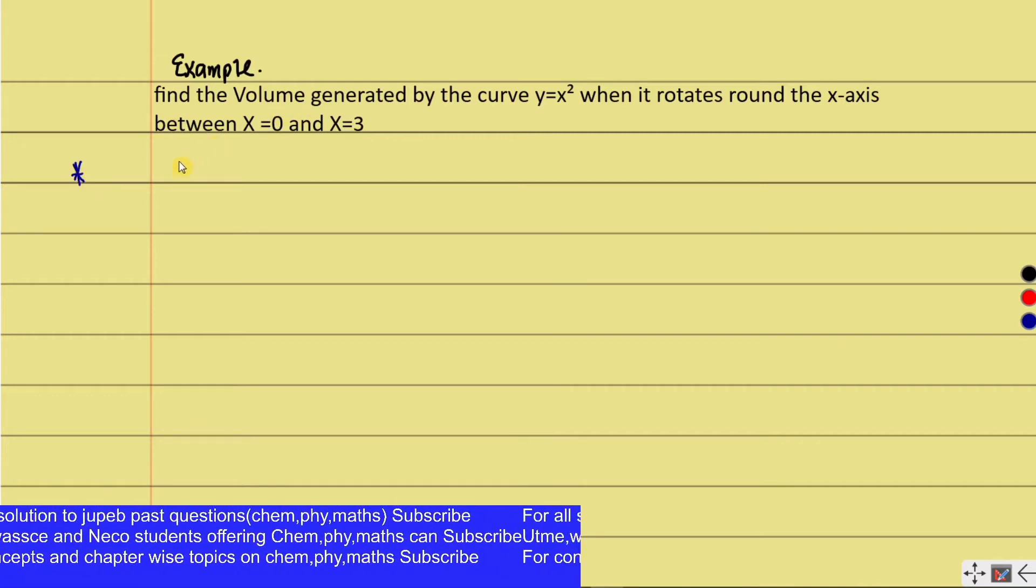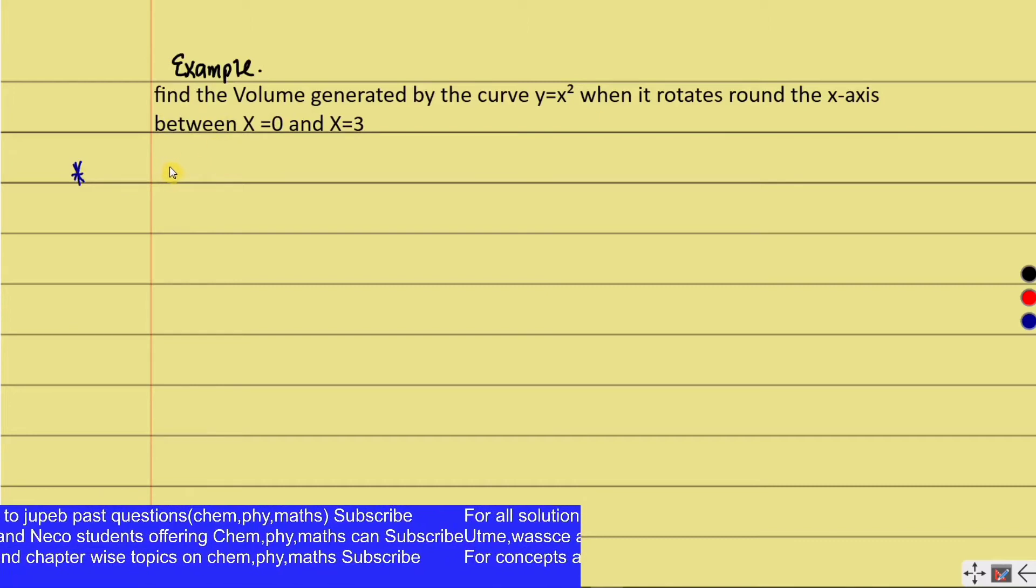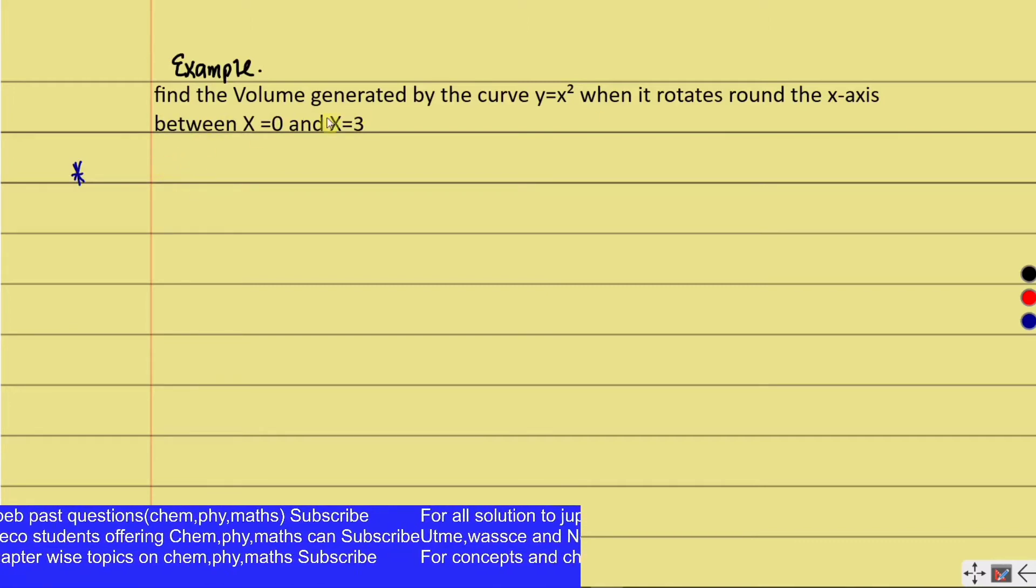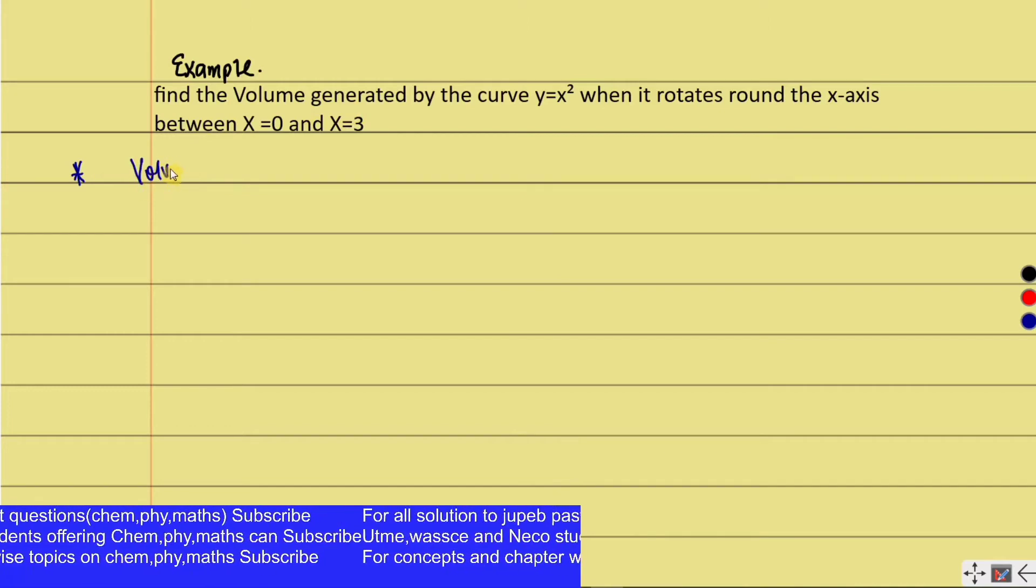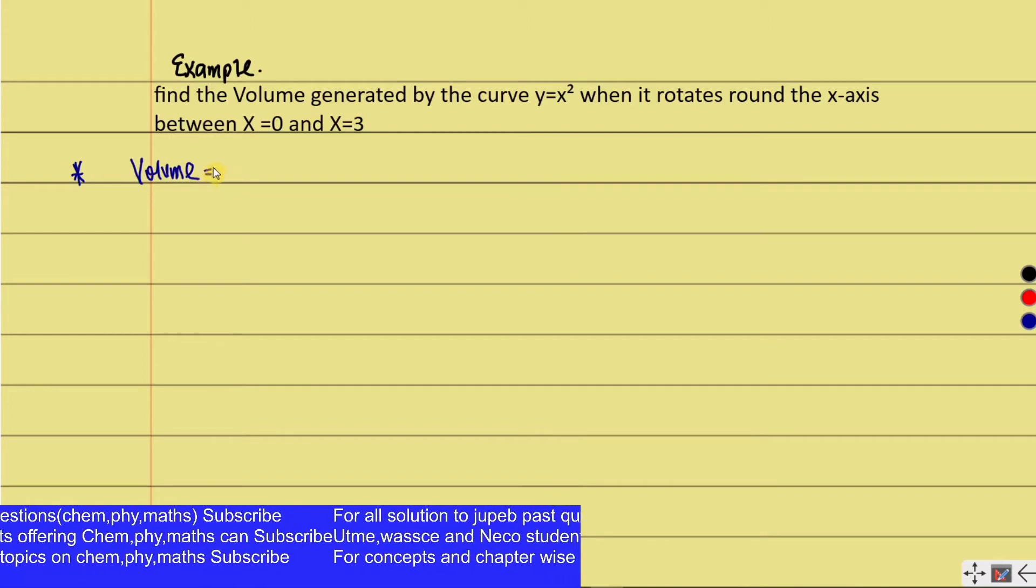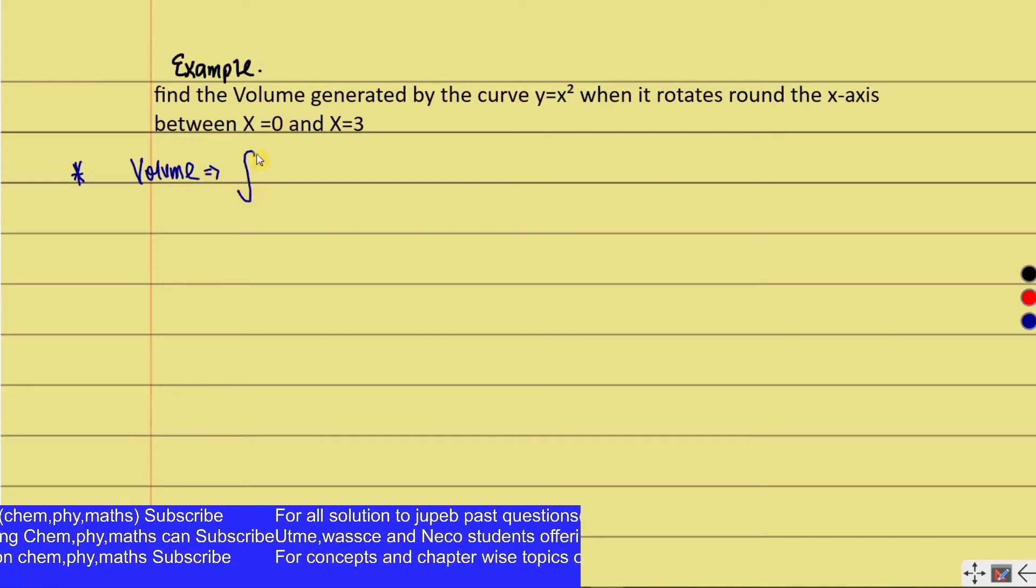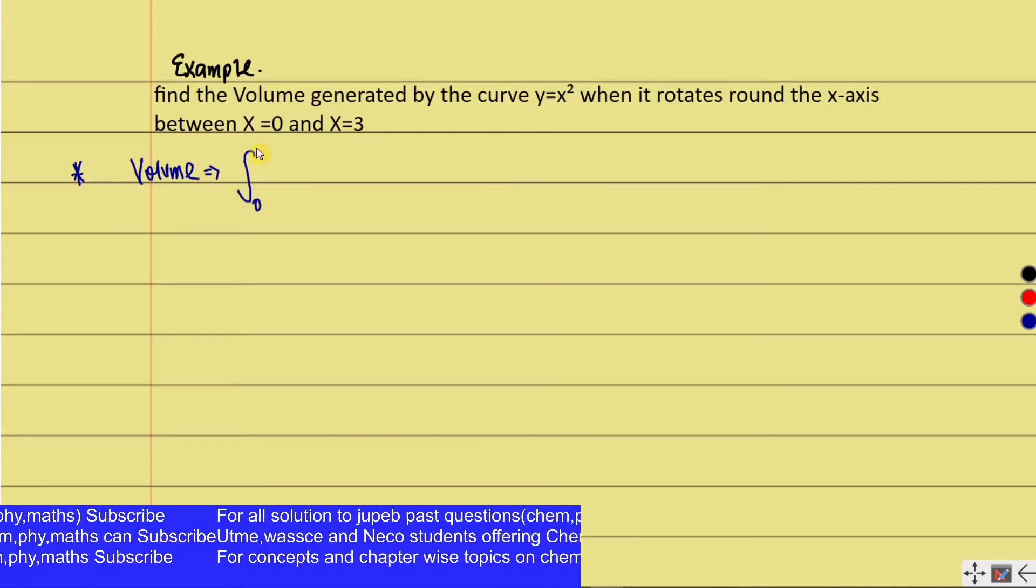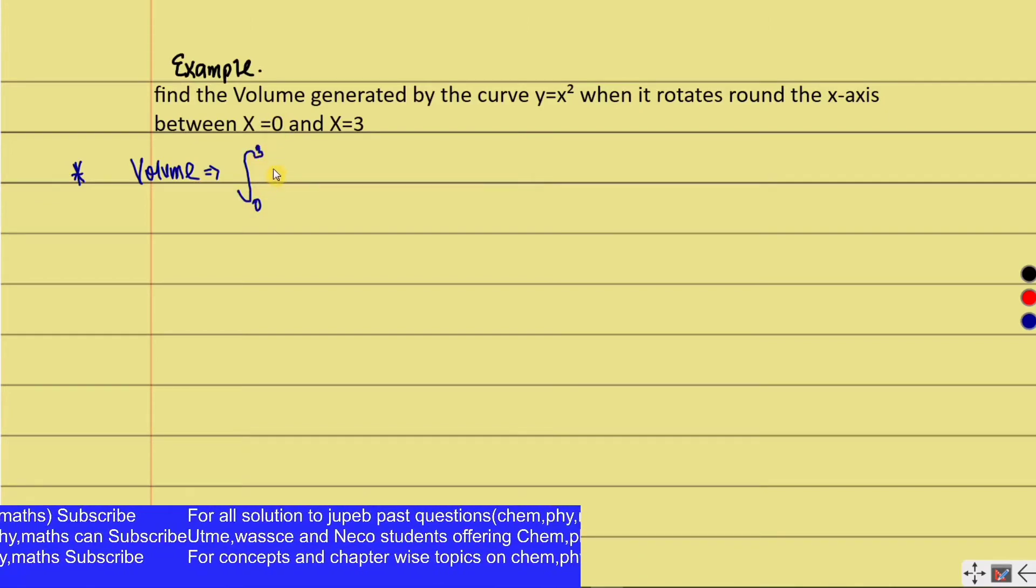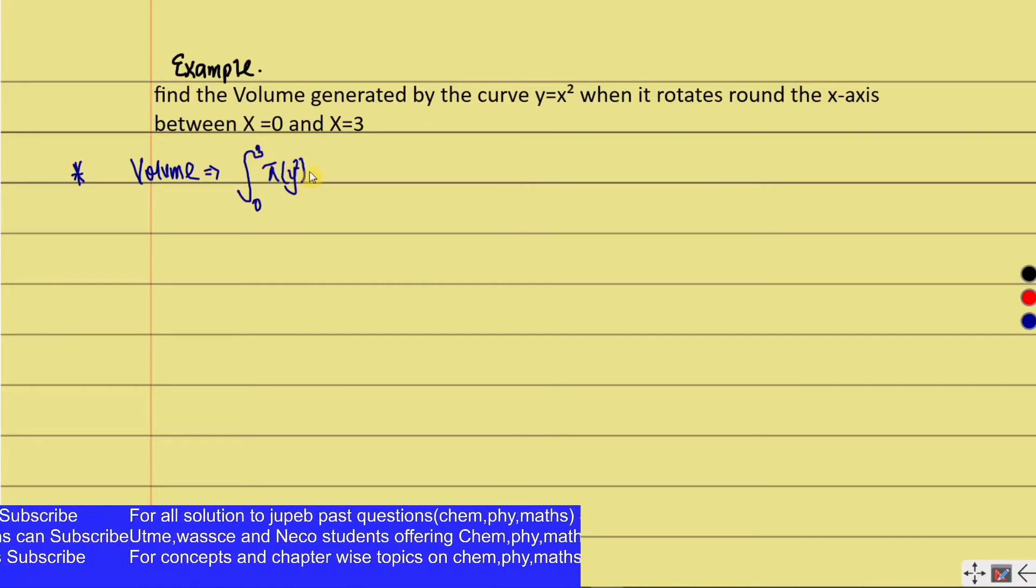This question was captured from UTME, WAEC Further Math, and post-UTME. I have a series of questions like that solved on my page; you can subscribe to see more. From what we've discussed, the volume of solid revolution when it rotates is given as the integration from 0 to 3 of π y² dx.